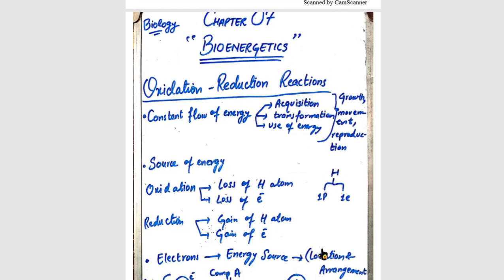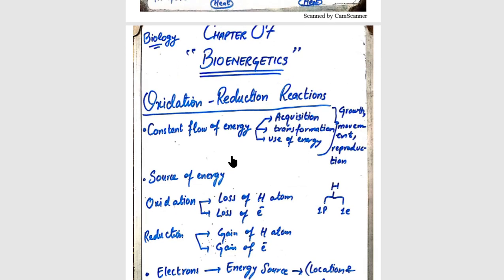Next, we move to the topic of oxidation-reduction reactions. All life activities involve a constant flow of energy. This constant flow of energy comprises three things: energy acquisition, energy transformation, and energy use. Acquisition means obtaining energy. Transformation means converting energy. The use of energy carries out life activities such as growth, movement, and reproduction.